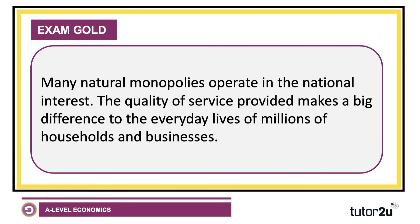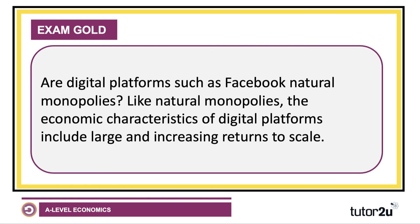Many natural monopolies operate in the national or public interest — part of your evaluation. The quality of water supplies, safety of beaches, cleanliness of our water and sewage system makes a big difference to the everyday lives of millions of people in the UK. We need to get the regulation of these industries right. What about digital businesses? Some say the rapid rise of Instagram, Facebook, Google, and Uber — do those digital platforms have aspects of natural monopoly?